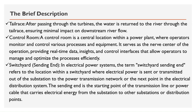Control room: a central location within a power plant where operators monitor and control various processes and equipment. It serves as the nerve center of the operation, providing real-time data insights and control interfaces that allow operators to manage and optimize the processes efficiently. Switchyard sending end: the location within a switchyard where electrical power is sent or transmitted out from the generator substation to the power transmission network. It is the starting point of the transmission line carrying electrical energy from the substation to other substations or distribution points.